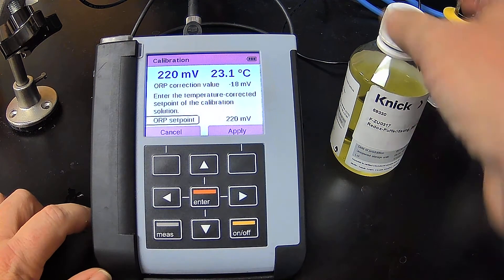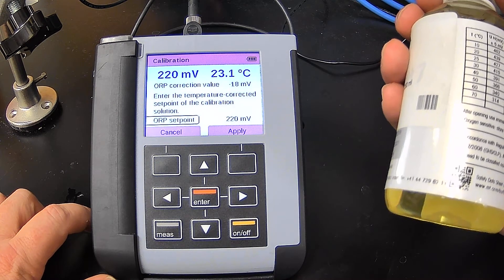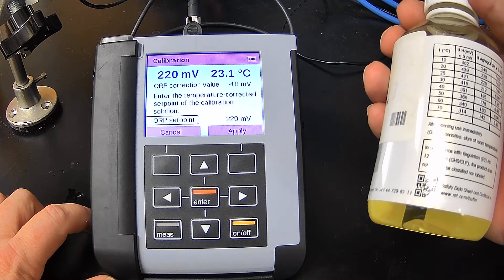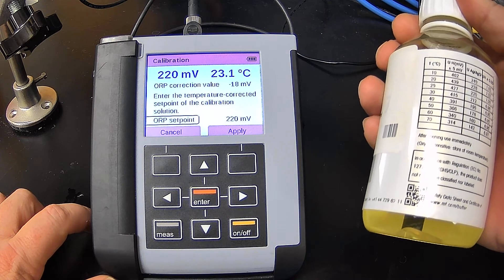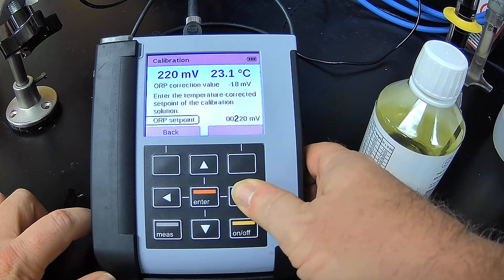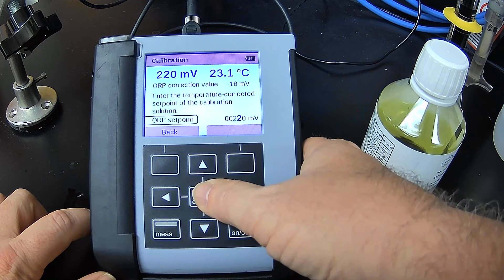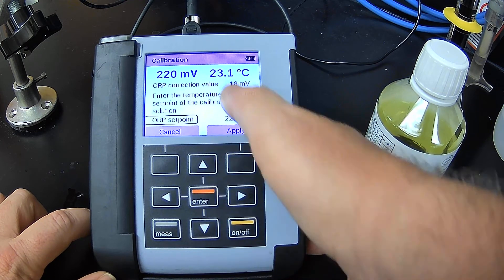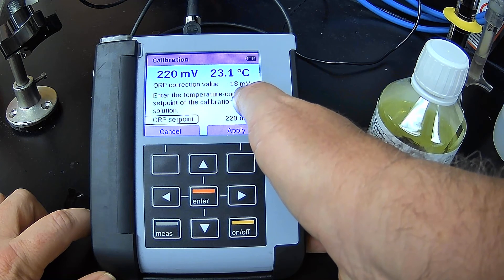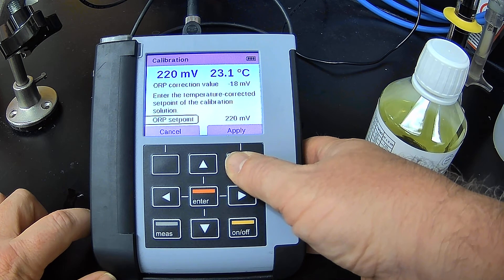So now I'm going to tell it at 23 degrees Celsius. Actually, we're between 20 and 25. So I'm going to tell it that it is 220 millivolts, which we already have. But if I wanted to change it, I could do that. So I hit enter. Okay. My correction value is going to be negative 18 millivolts based on the reading. I hit apply.